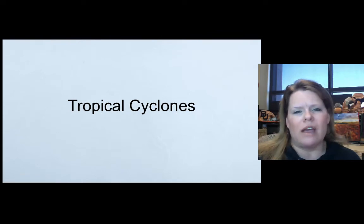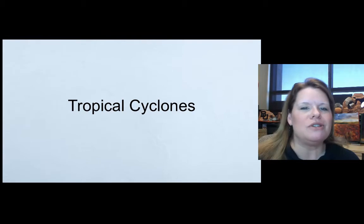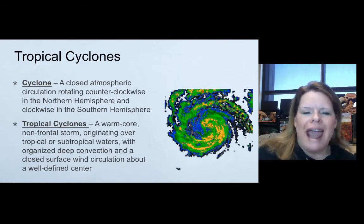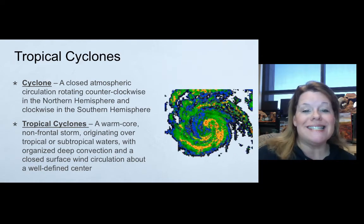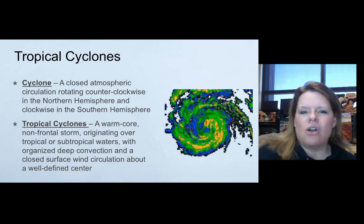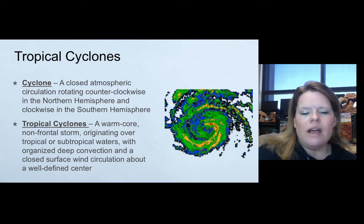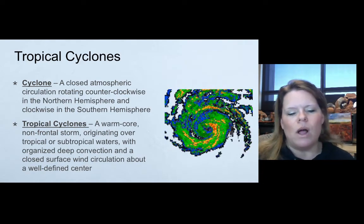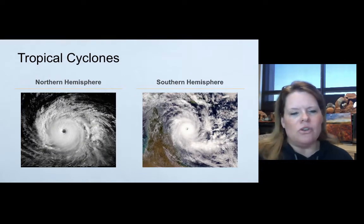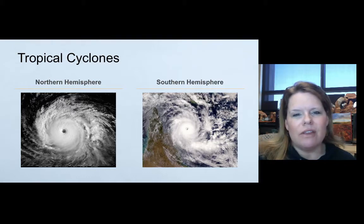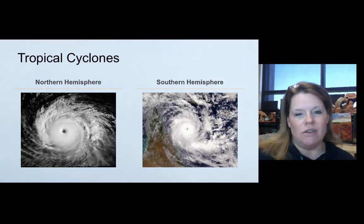Now let's shift gears to tropical cyclones. A cyclone is a closed atmospheric circulation rotating counterclockwise in the northern hemisphere and clockwise in the southern hemisphere. Tropical cyclones are warm-core, non-frontal storms originating over tropical or subtropical waters, with organized deep convection and a closed surface wind circulation about a well-defined center — the eye. I've traveled to New Zealand, Australia, and South America and watched water drain differently the further you get from the equator.